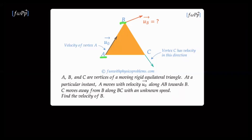ABC is an equilateral triangle. The vertex A has a velocity u0 towards the vertex B. The vertex C has a velocity in the direction of BC, but its magnitude is not stated. The problem is to figure out the magnitude and direction of the velocity of the vertex B.